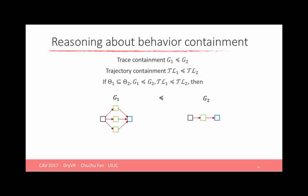The second reasoning proof rule is called behavior containment. We see these two graphs, G1 and G2, have trace containment if every trace of G1 is going to be contained in the trace of G2. So this can be checked by a standard forward simulation between graphs. We also define the trajectory containment if every trajectory of black box one is going to be contained in the trajectory of black box two. So with trace containment and trajectory containment, further we require that the initial set of one is going to be contained in the initial set of two.